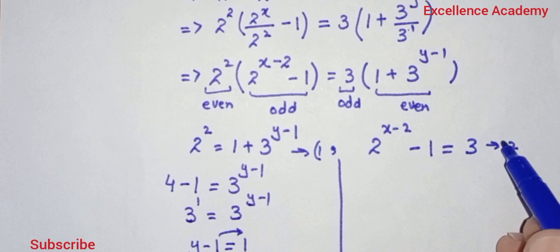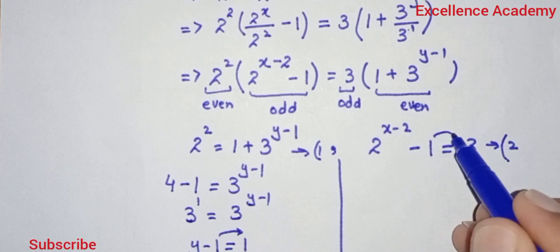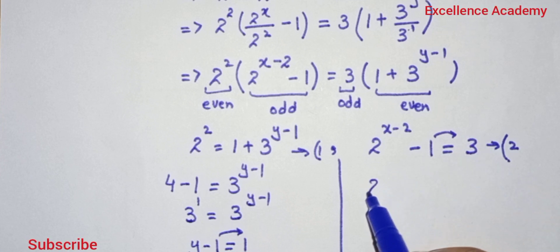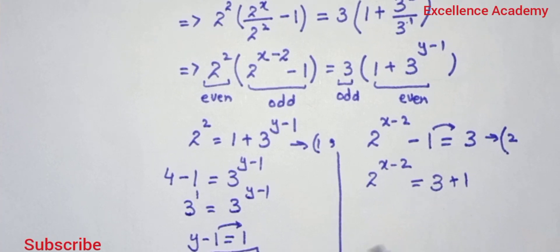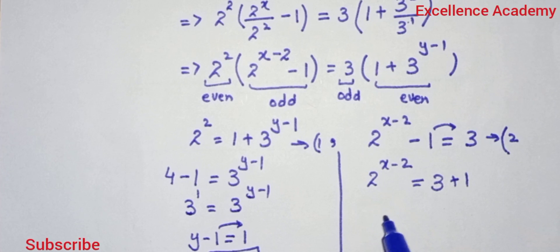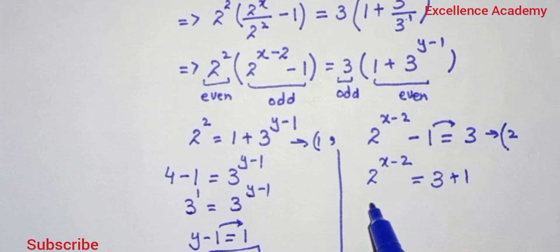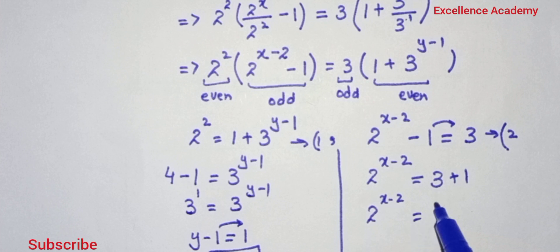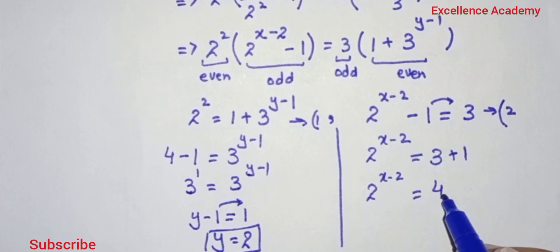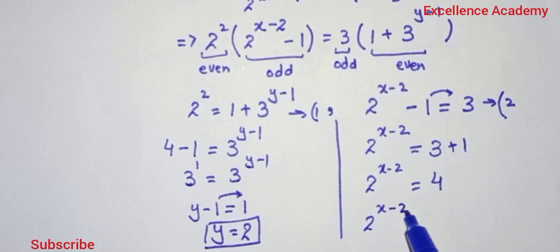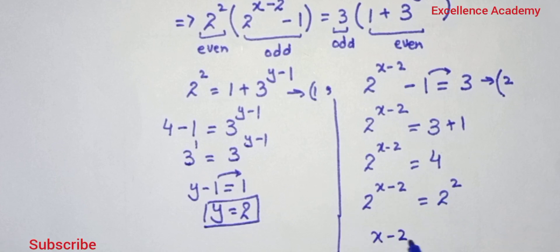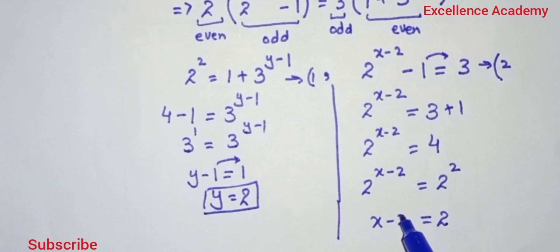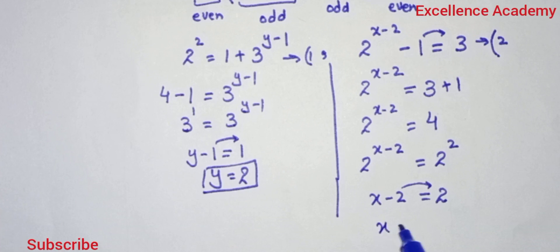Now we solve Equation 2. Shifting minus 1 to the right hand side: 2^(x minus 2) equals 3 plus 1. After simplification, 2^(x minus 2) equals 4, which we write as 2^(x minus 2) equals 2^2. The bases are the same, so the powers are equal: x minus 2 equals 2, giving us x equals 4.